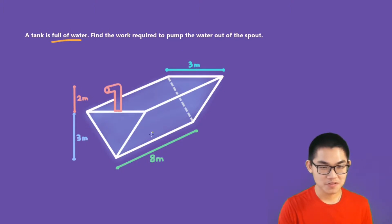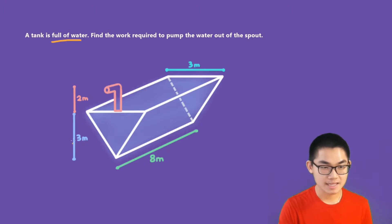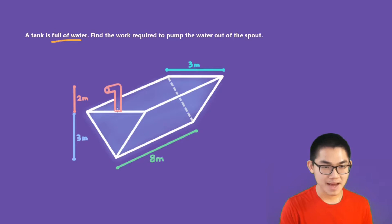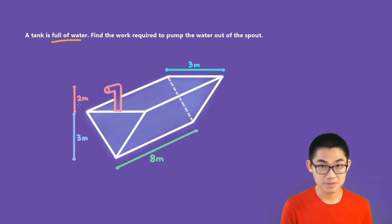So first of all, we know that the length of this tank is 8 meters, the height of this tank is 3 meters, and the width of this tank is also 3 meters. And then we have a spout that is 2 meters — we have to move all of the water and pump it outside of the spout.